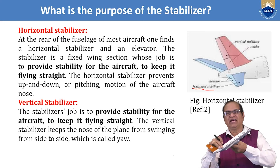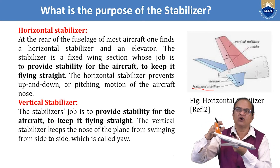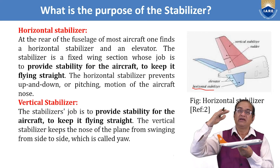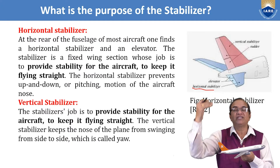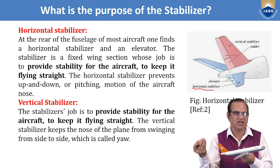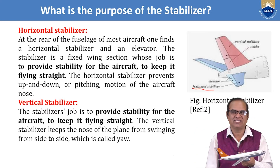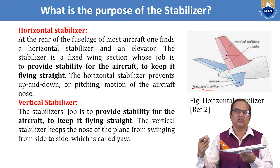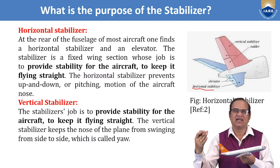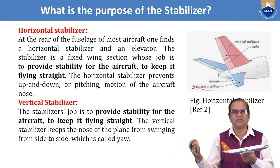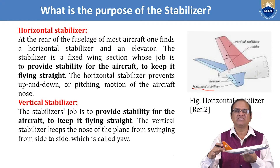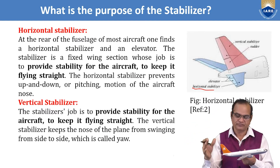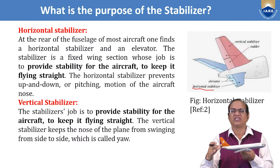If there were no stabilizer, the nose would pitch up and down. The horizontal stabilizer produces enough lift force to keep the nose maintained straight. It is very important especially for passenger or commercial aircraft that during cruising the aircraft should be in a horizontal position. Otherwise this creates a lot of discomfort, increases fuel consumption, and increases travel time. The horizontal stabilizers play a very important role in keeping the aircraft horizontally stable — that is why they are called horizontal stabilizers.